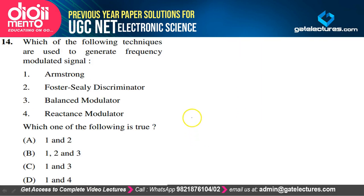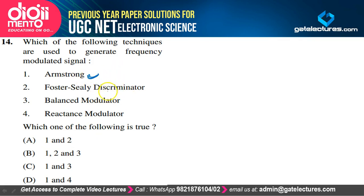Which of the following techniques are used to generate a frequency modulated signal? The Armstrong method is used to generate FM signals — true. Foster-Seeley discriminator is wrong. Balanced modulator is used for DSB signals — wrong. Reactance modulator is true. So options 1 and 4 are correct, and option D satisfies the explanation.